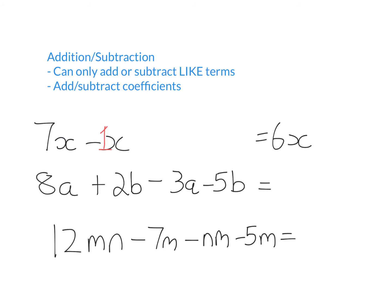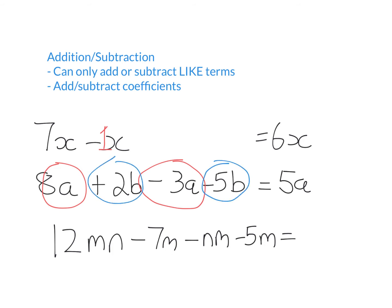Sometimes you'll have to simplify an expression like this. You have to identify the like terms. This term and this term are like terms because they both have an a. But this term is negative 3a. So I go 8a subtract 3a, which gives me 5a. Now 2b and negative 5b are also like terms because they both have a b. So 2 subtract 5 is negative 3, and then I just write the pronumeral. I can't simplify this expression any further because this term has an a and this one has a b — different letters, not like terms, can't simplify.